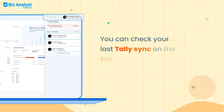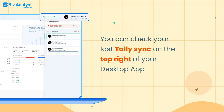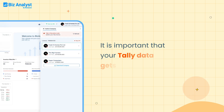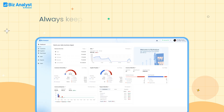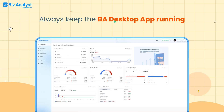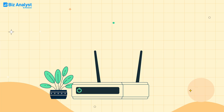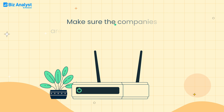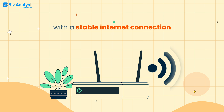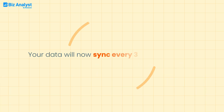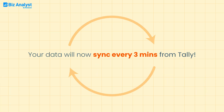You can check your last Tally sync on the top right of your desktop app. It is important that your Tally data gets updated timely, for which we recommend you follow two steps on the Tally connected device. One, always keep the BA Desktop app running. And two, keep your Tally open and make sure the companies are loaded on the gateway of Tally with a stable internet connection. Your data will now sync every three minutes from Tally.